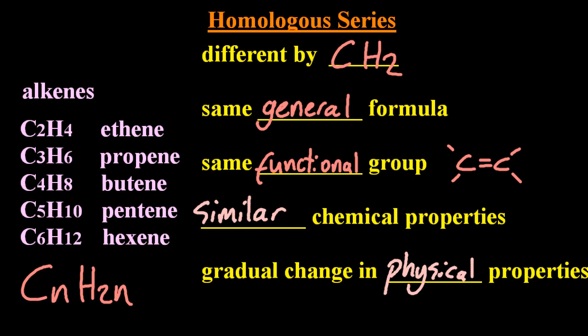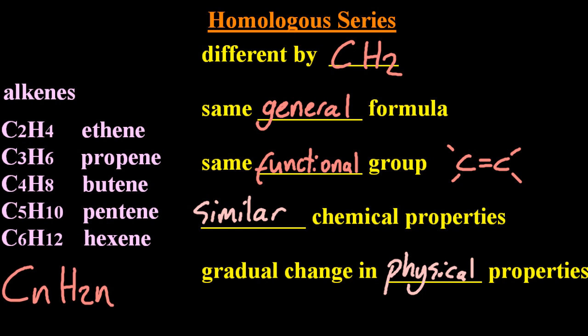Looking at the change in physical properties, as you go down any homologous series, the chain gets longer, more electrons, more London dispersion forces. So physical properties like boiling point and melting point are going to change.